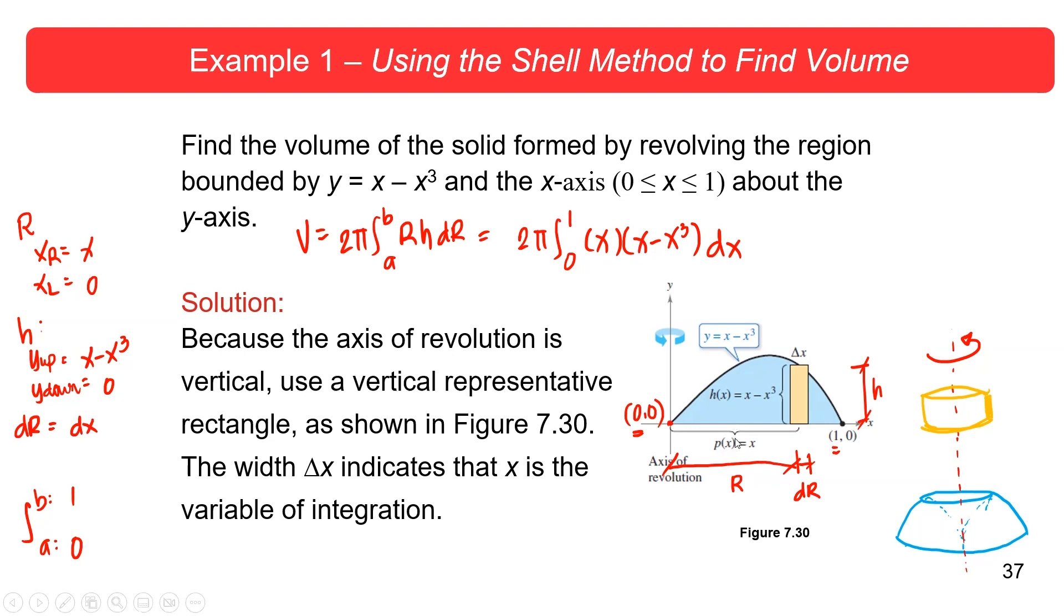Kasi ito, may r, may h, may dr. All you need to know first is your dr, then yung h, and then yung r. Yung r kasi parang, sabi niyo, sir, eh, but yung r, napaka-arbitrary, yes. The radius is any arbitrary x value. It can be at any x value. The h kasi, y up minus y down.